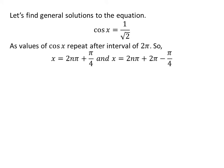Now let us find the general solutions for the equation cosine of x is equal to 1 upon square root of 2. Since the values of cosine of x repeat after the interval of 2 times pi, the general solutions are 2 times n times pi plus pi upon 4, and 2 times n times pi plus 2 times pi minus pi upon 4, where n is an integer.